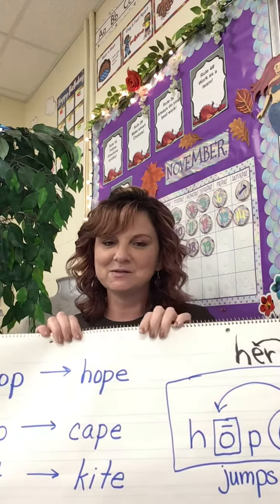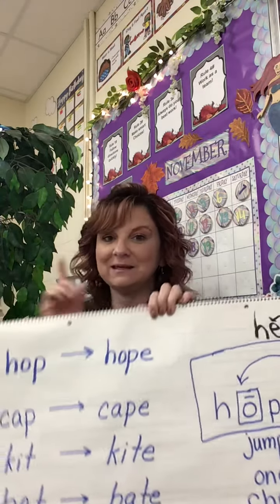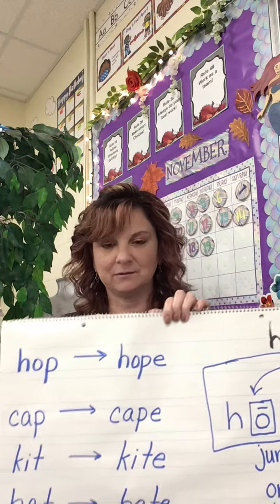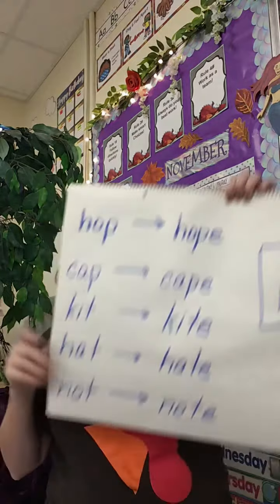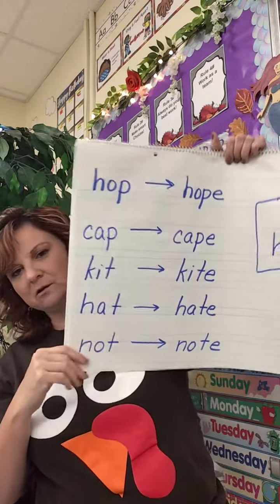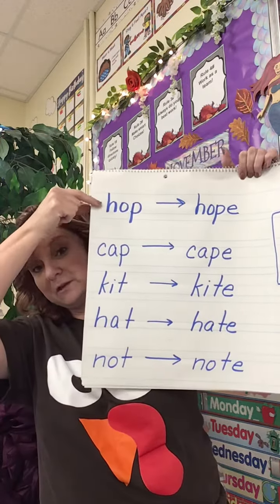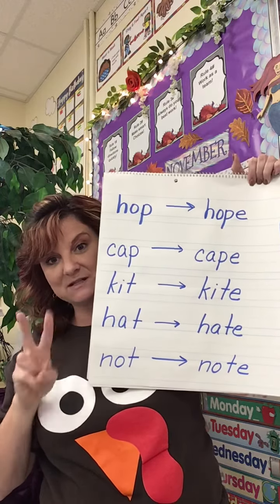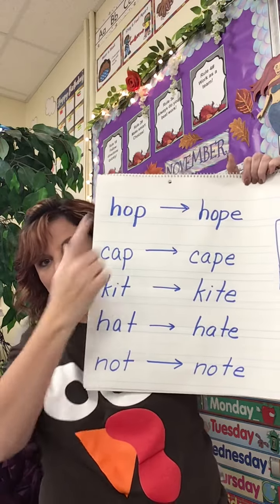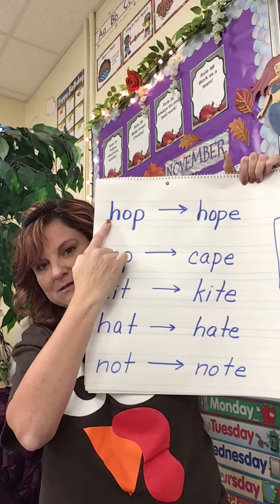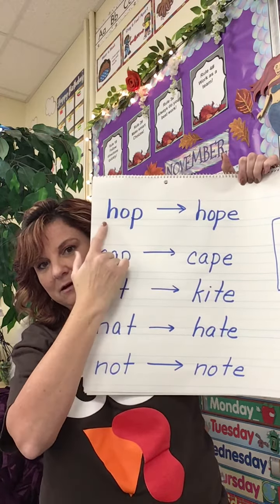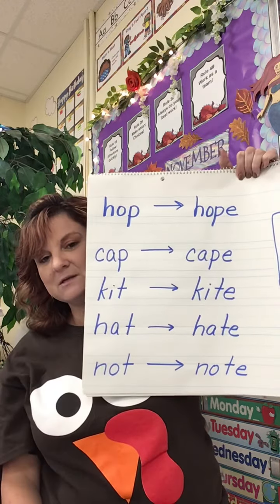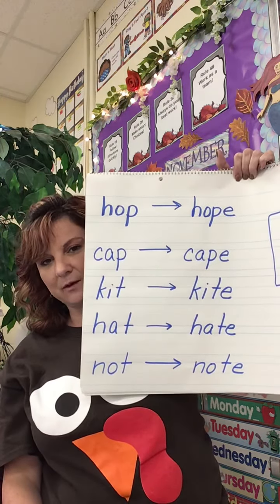Most kids know that the E is silent — you don't hear it. So when we first start learning in first grade or even kindergarten, when we first start learning words, we call them CVC words. They're usually a consonant, a vowel, and a consonant — H-O-P, hop, right? So most of you know that.